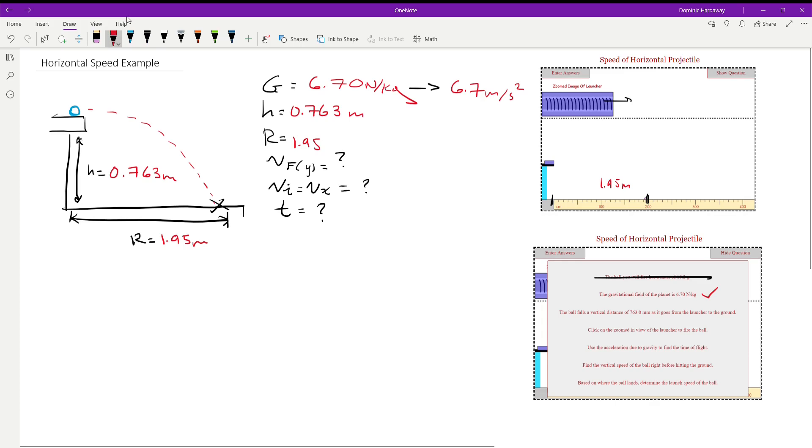So let's get to it. The first thing we're going to do is find the time by using the h equals one-half a t squared equation. We're just going to plug in what we know and solve for what we don't know. So we have our height, which is 0.763 equals one-half. We have our acceleration, which is gravity. So one-half of 6.7 is 3.35.